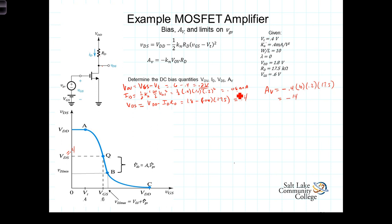All righty, the next question then becomes, how big of a swing can we have on the input signal? We're now talking about how big, what is the amplitude of VGS, the small signal, how big can that be, and still keep the transistor in the saturation region?